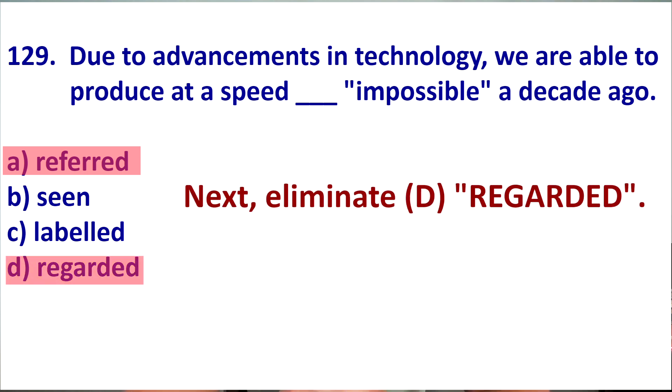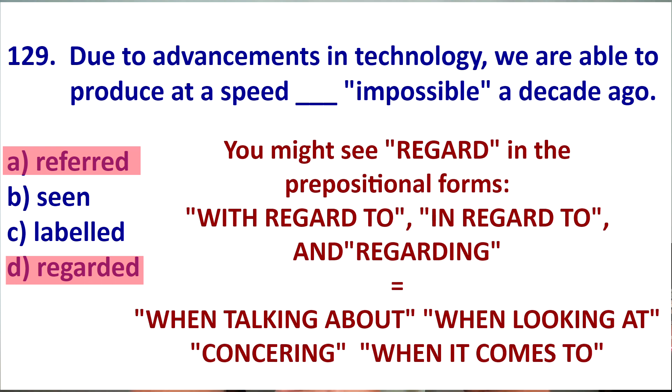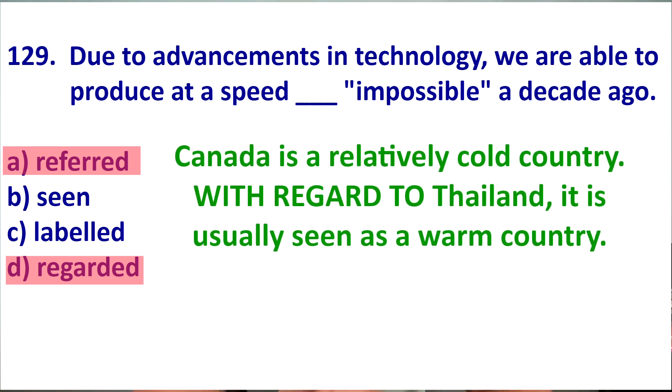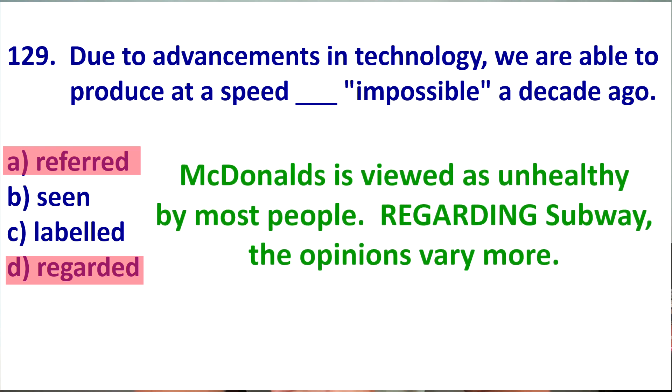Let's eliminate D. Regard is an interesting word. You might know this word in the prepositional phrase, which is in regard to, with regard to, regarding. This means when looking at, when talking about. For example, Canada is a relatively cold country. With regard to Thailand, it is seen as a warm country. Another example. McDonald's is viewed as unhealthy by most people. Regarding Subway, the opinions vary more. So, here we can see regarding means when talking about.